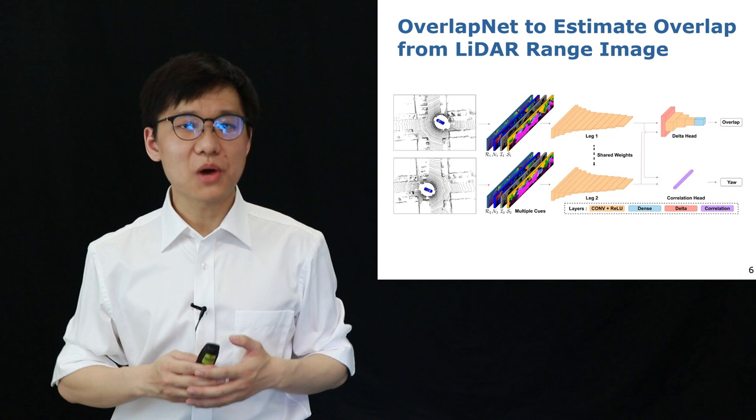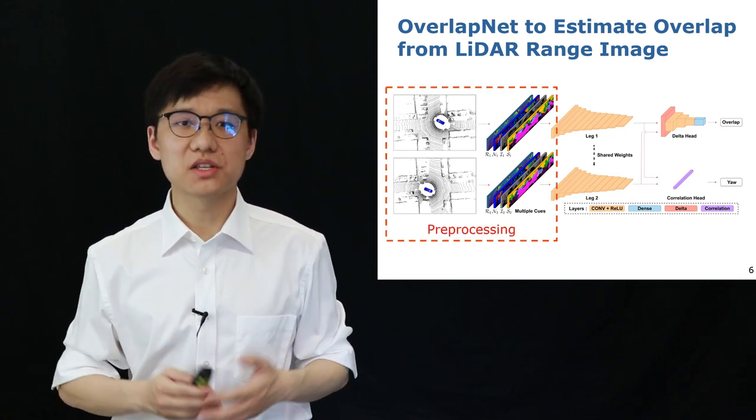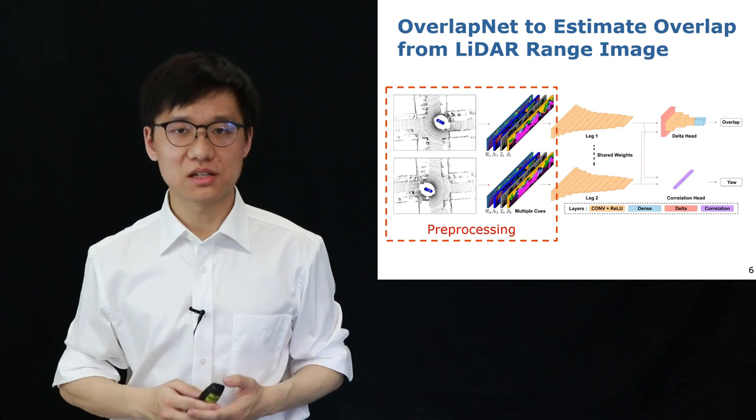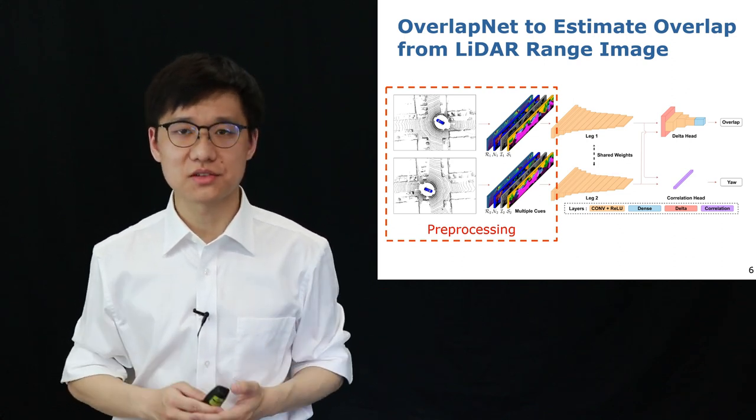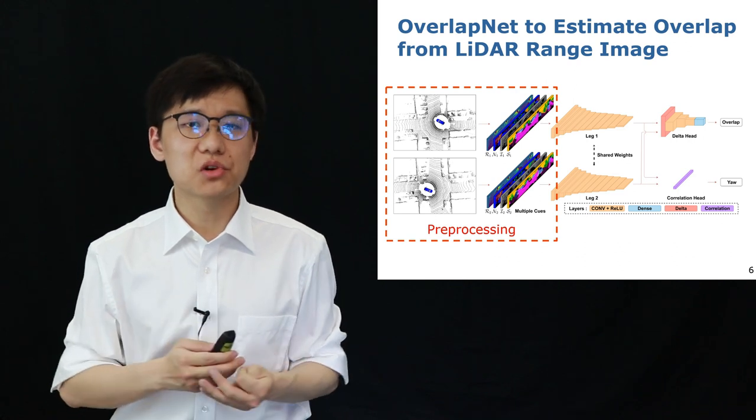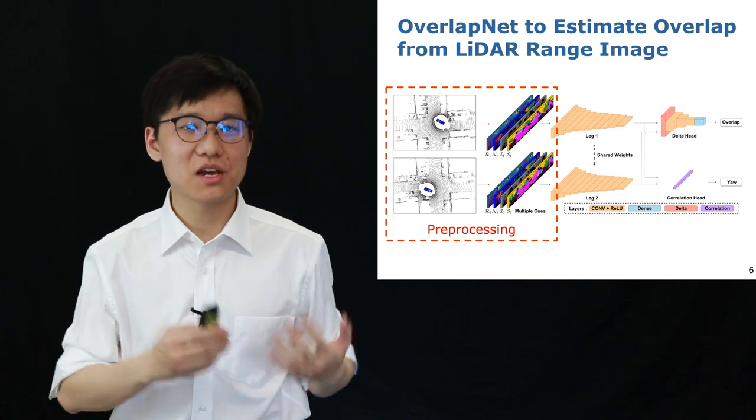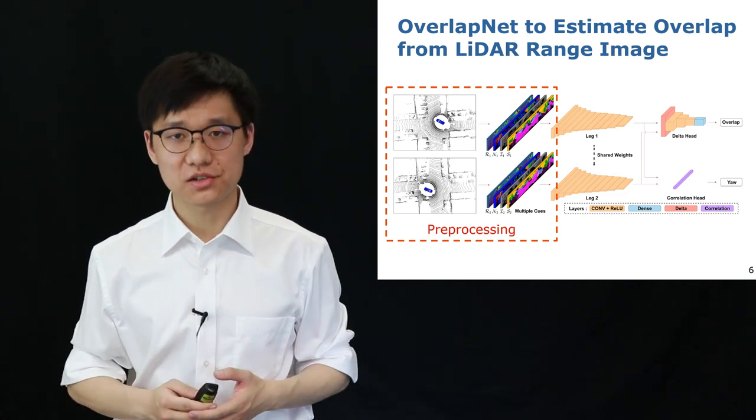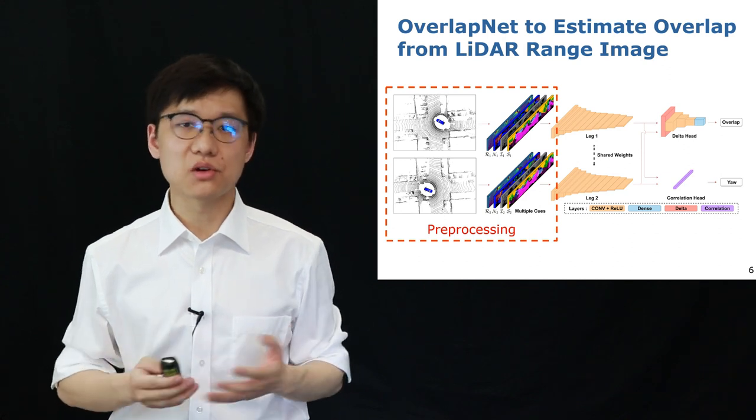This is the pipeline overview of our approach. On the left hand side you see the pre-processing of the input data. It exploits multiple cues generated from the LiDAR scans including range, normal, intensity and semantic information, which are shown here as different colored image layers. We use all this information as the input to our OverlapNet.